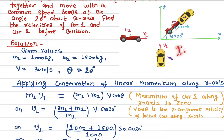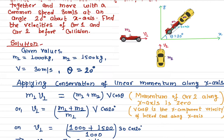This is called a perfectly inelastic collision — when two cars lock together after impact. Whether it is an elastic or inelastic collision, the total momentum is always conserved.